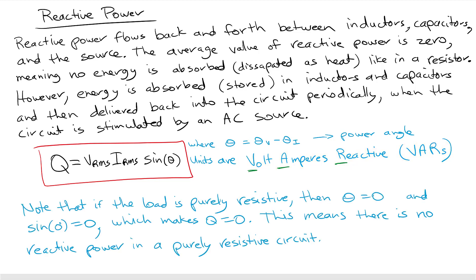If we imagine our load was purely resistive, then our phase angle would be zero, because there would be no phase difference between the voltage and current waveforms. The sine of zero is zero, which would make Q zero — so there is no reactive power in a purely resistive circuit.